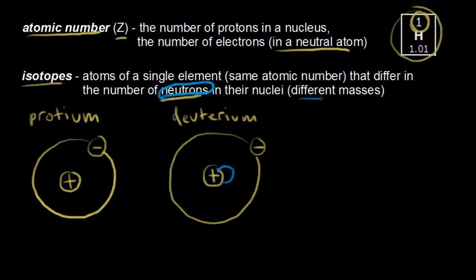Isotopes have different masses because they differ in number of neutrons. Notice, though, that they have the same atomic number — the same number of protons in the nucleus, which is one. That's important, because if you change the number of protons, you're changing the element. We're talking about atoms of a single element here — deuterium is still hydrogen; it's an isotope.